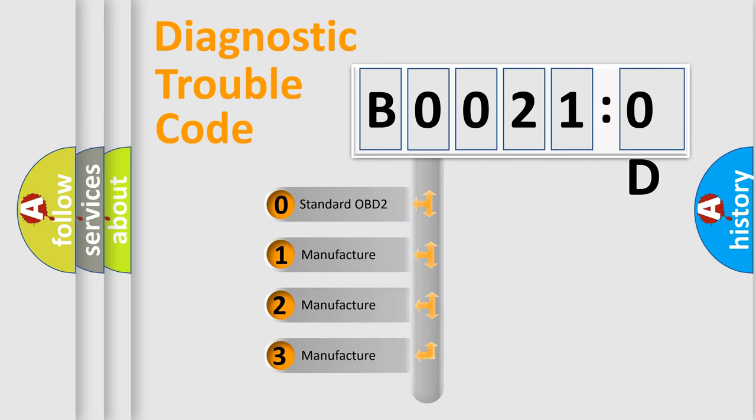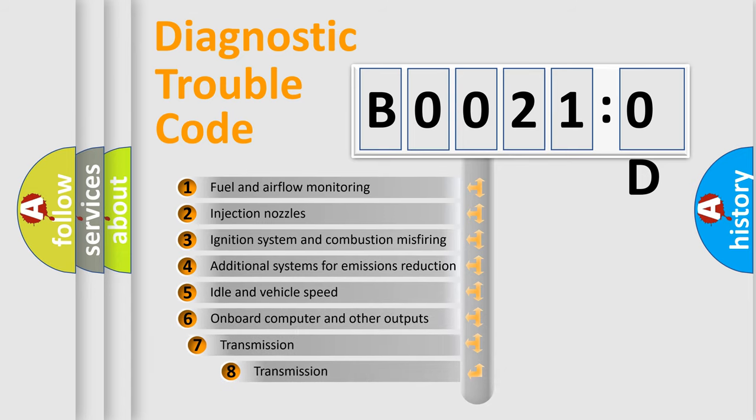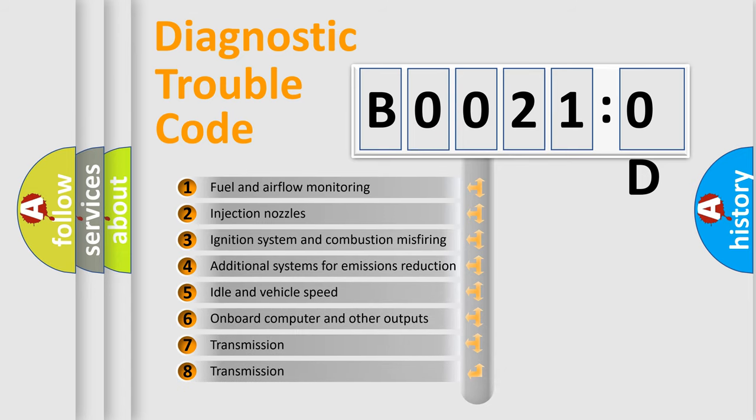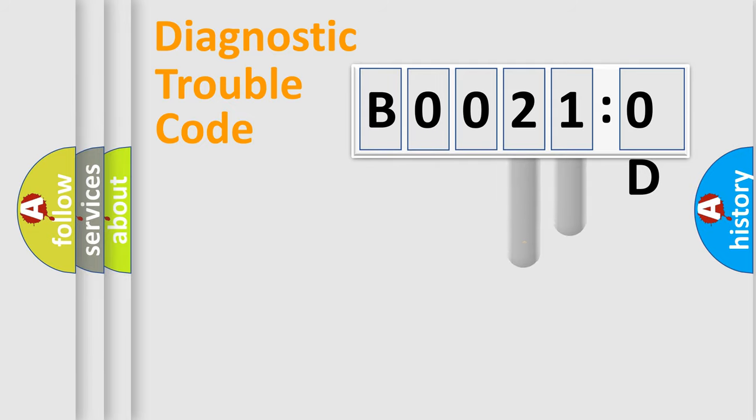If the second character is expressed as zero, it is a standardized error. In the case of numbers 1, 2, or 3, it is a manufacturer-specific error. The third character specifies a subset of errors. The distribution shown is valid only for the standardized DTC code. Only the last two characters define the specific fault of the group.